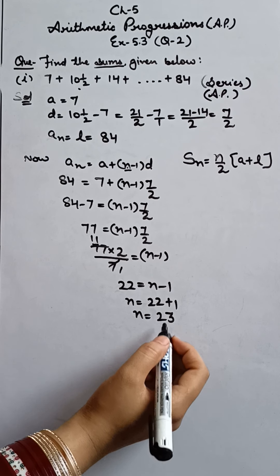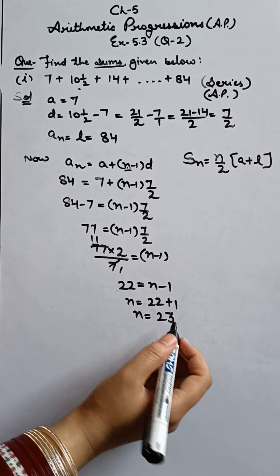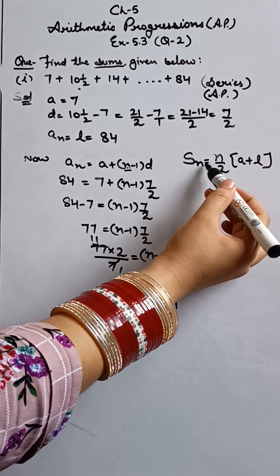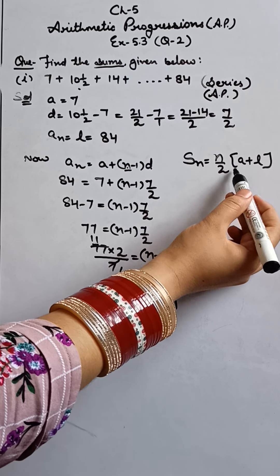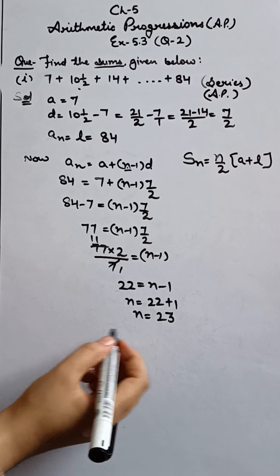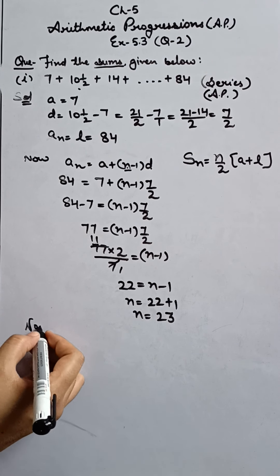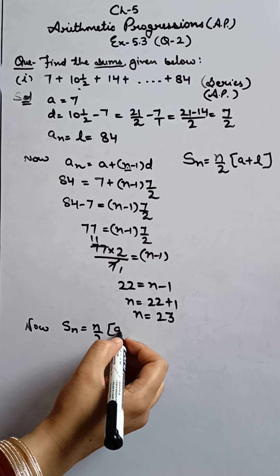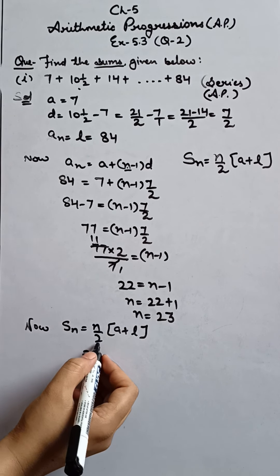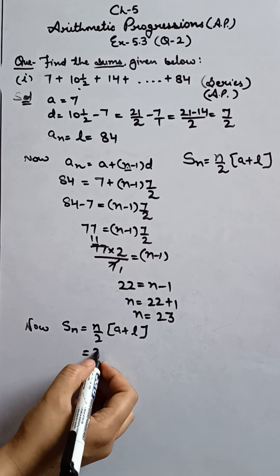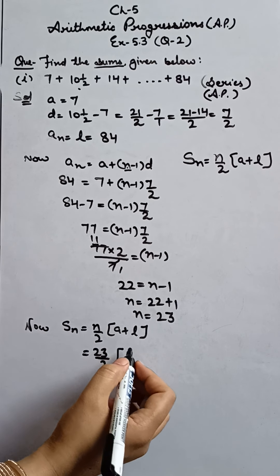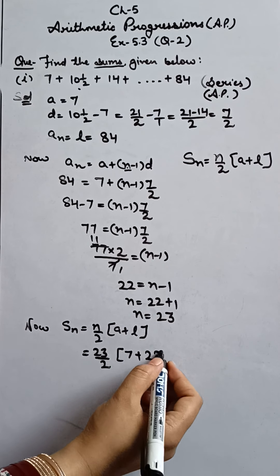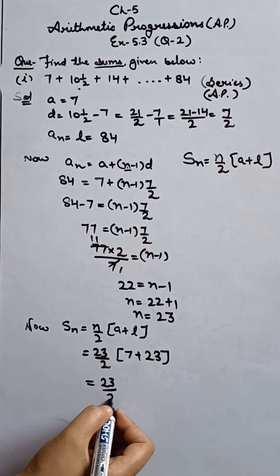Clear? So is this the answer? No. Because we had to find the sum. And for sum, what formula will we apply? SN is equals to N upon two into A plus L. Now in this we will put these values. Now SN is equals to N upon two A plus L. Now we have N available, 23 upon two. And A was 7. L is 84.